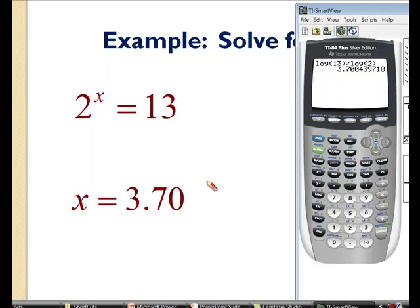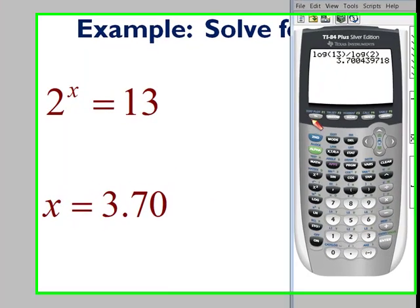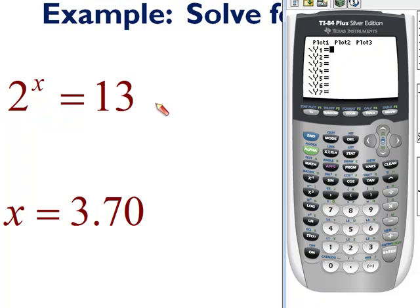Now, if you really wanted to get fancy, couldn't we graph both sides of this equation? Couldn't we graph 2 raised to the x for y1, and then graph y2 equals 13, and the intersection would be our solution? Let's see if we get something close to 3.70 when we do this.